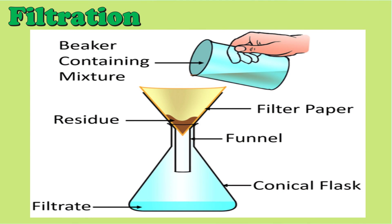A mixture of liquid and tiny particles of solid which have not been dissolved can be separated through filtration. A filter paper is used to separate the suspended particles from the liquid. It has tiny pores that allow the liquid part of the mixture to pass through it. The solid particles that are left behind are called residue, while the liquid that passes through the filter paper is called filtrate.